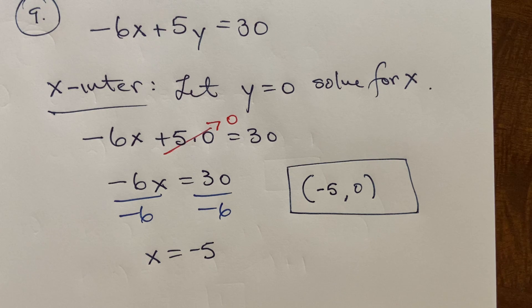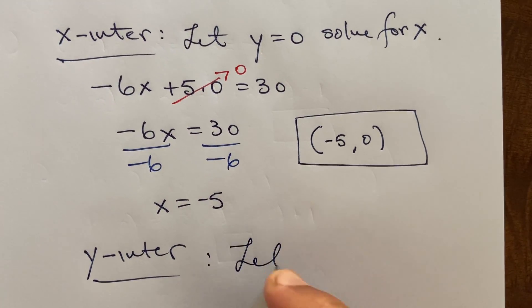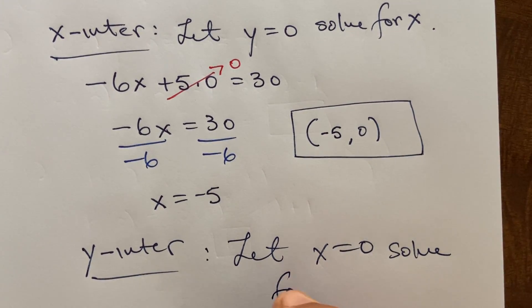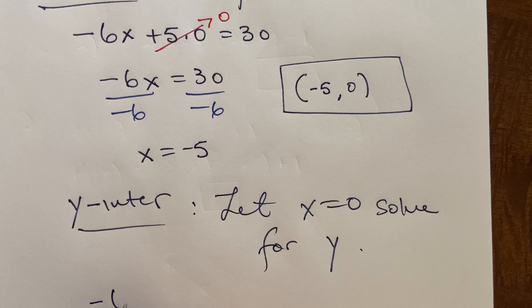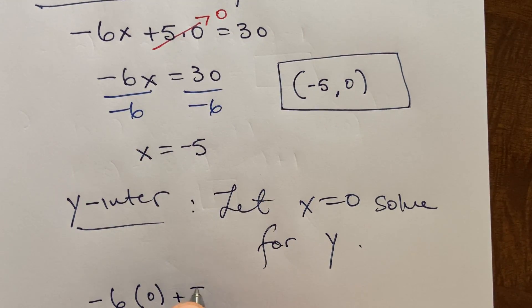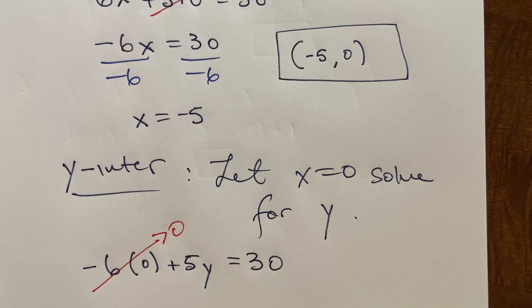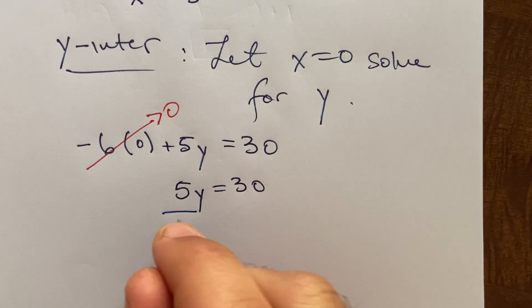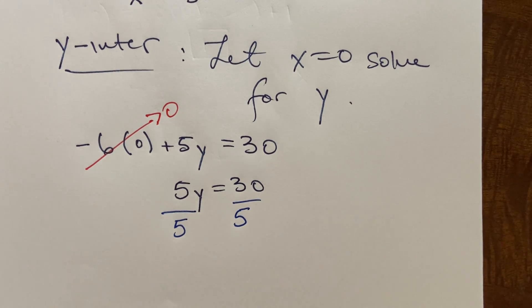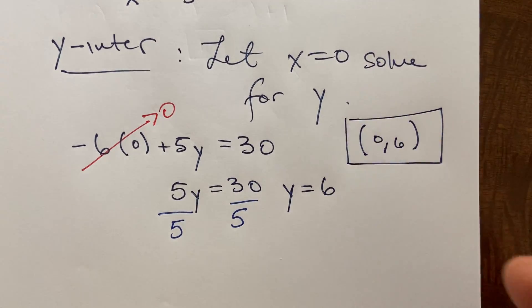For the y intercept, it's a similar thing, but we let x equals zero and solve for y. So I'll have negative six times zero in this case, and then plus five y equals thirty. Sorry, in this case this piece vanishes and we're just left with the five y equals thirty, and solve for y, so divide by five. So y equals six. So our y intercept would be zero six. The zero goes into the x location for the y intercept.